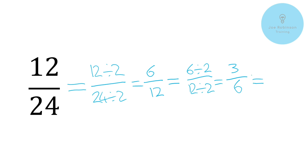Now to finish this one off, we're going to ask ourselves what will both of these divide by. Start again at the bottom — will they both divide by two? Well, six will, but three won't divide by two because that's going to leave us with 1.5, so we have a remainder and we want to keep these as whole numbers. So we go to the next number up, which is three. Will three divide by three? Yes, it will. And six will divide by three as well. So three divided by three and six divided by three gives us one and two. So you can see we've moved through the simplification process from stage to stage.